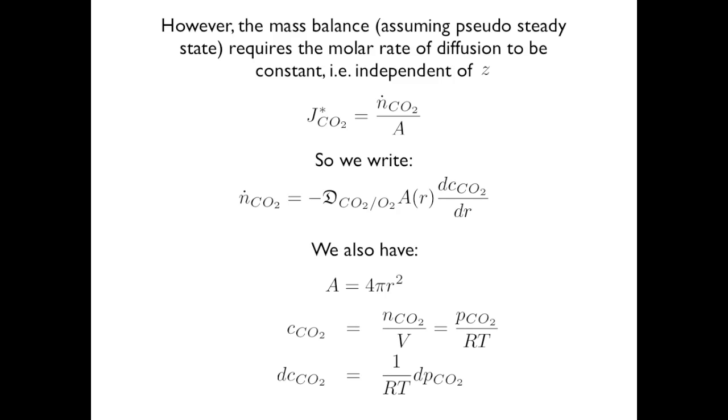Assuming ideal gas behavior, we relate the concentration of CO2 to its partial pressure: pCO2/RT, ensuring units are consistent. Since RT is constant, the derivative of concentration is 1/RT times the derivative of partial pressure.